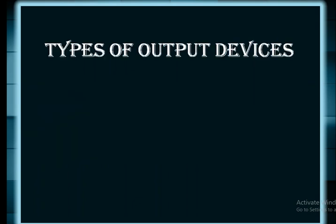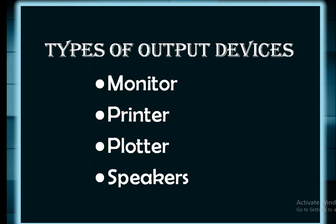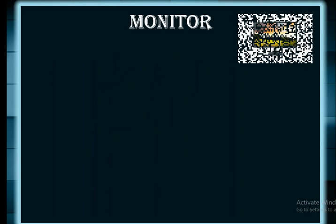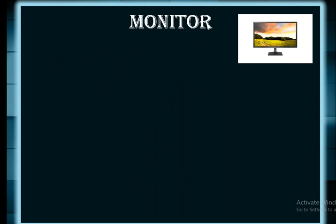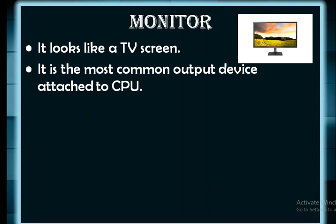There are various types of output devices such as monitor, printer, plotter, and speakers. Let's see the monitor. A monitor is quite similar to your TV screen. It is the most common output device.